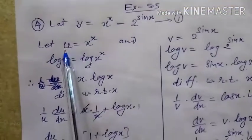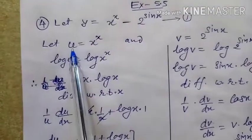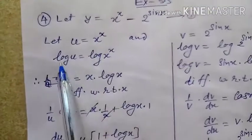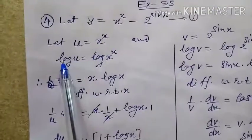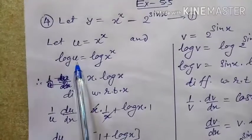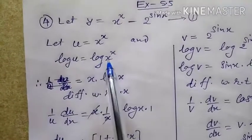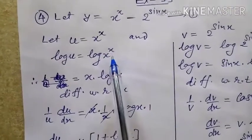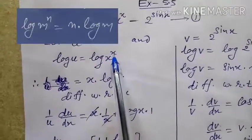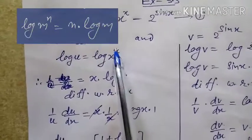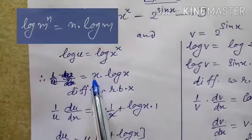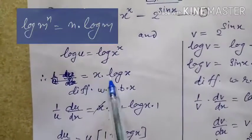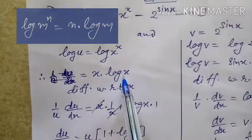So if the first term is u, then u = x^x. Taking log of both sides, log u = log(x^x). By the logarithm power rule, this power x comes down, so it will be x · log x.